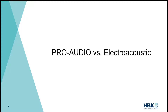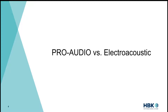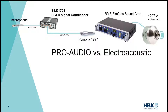A lot of engineers have used pro audio sound cards to test electroacoustic devices. These sound cards are fairly inexpensive, well designed, and can easily mix analog and digital streams. But they require external signal conditioners, power supplies, and cables to interface with measurement grade transducers, and usually come with a very complicated mixing table software that is difficult to configure. At HBK we believe in simpler design.